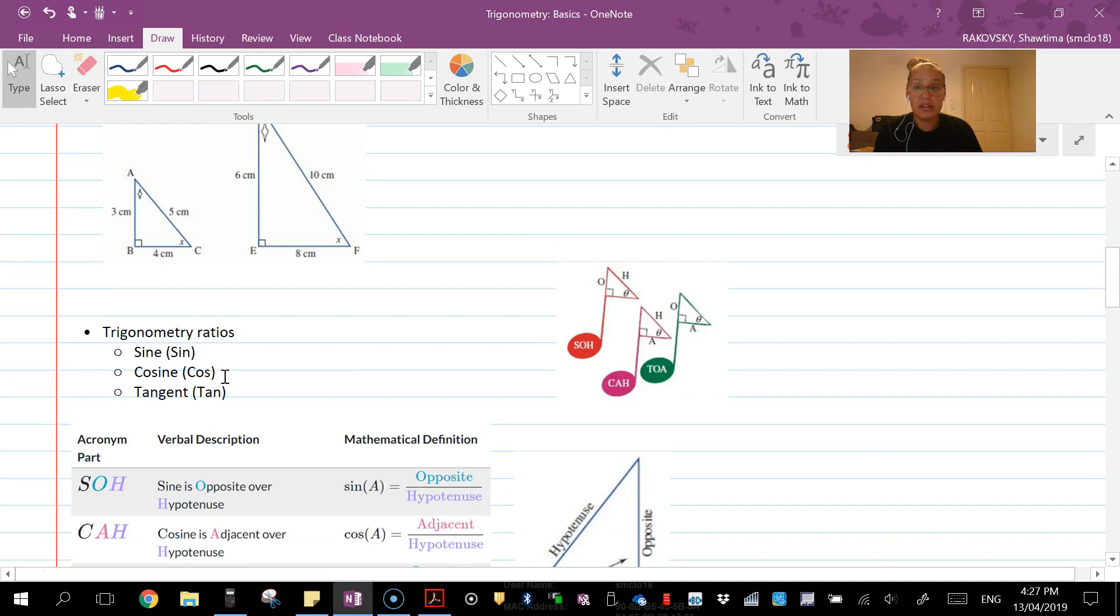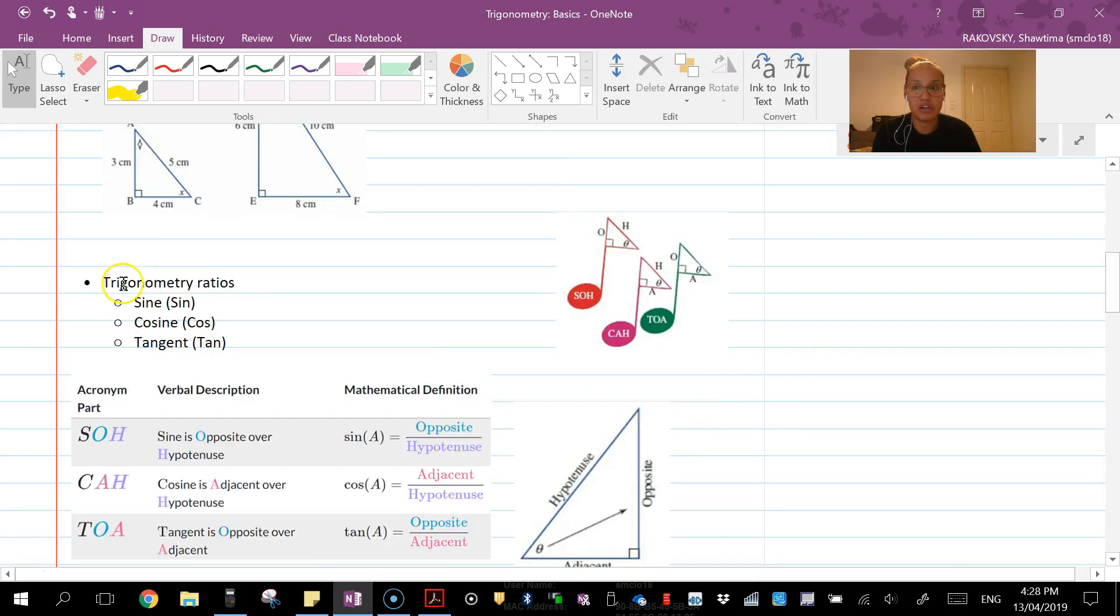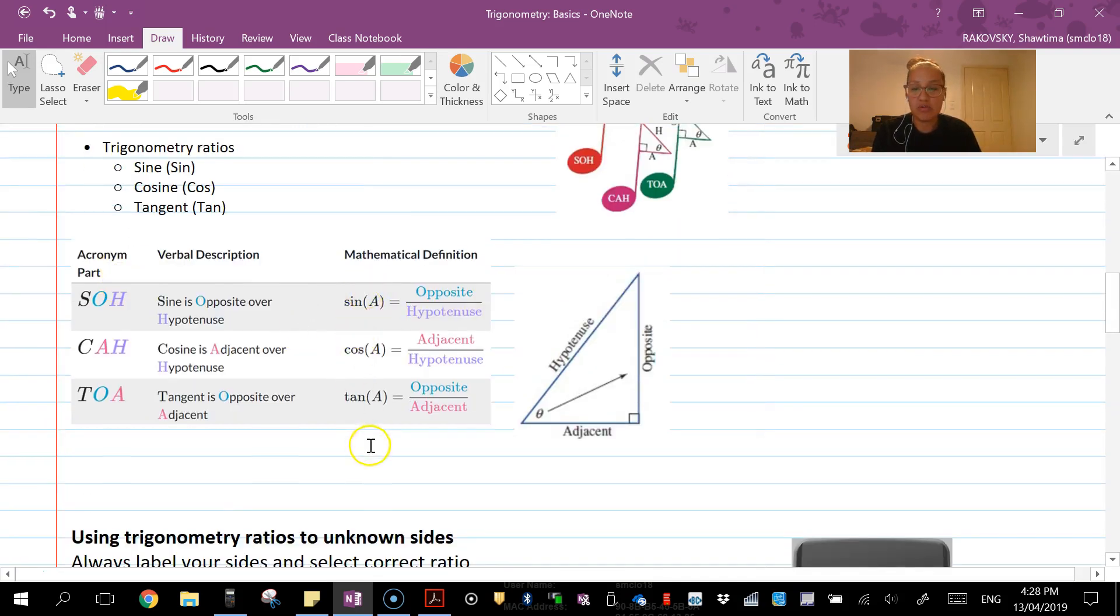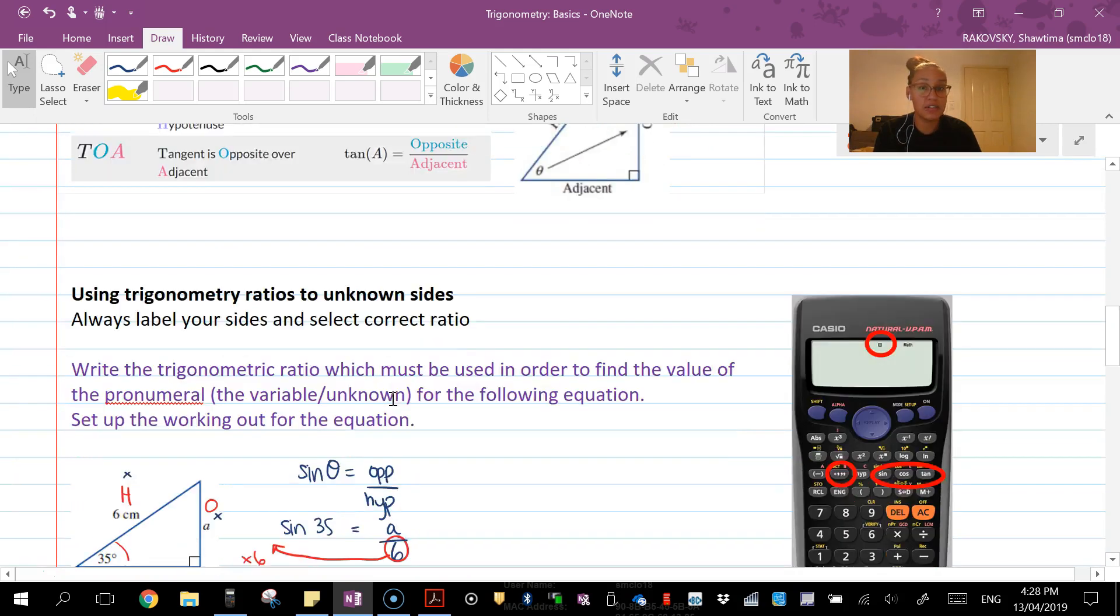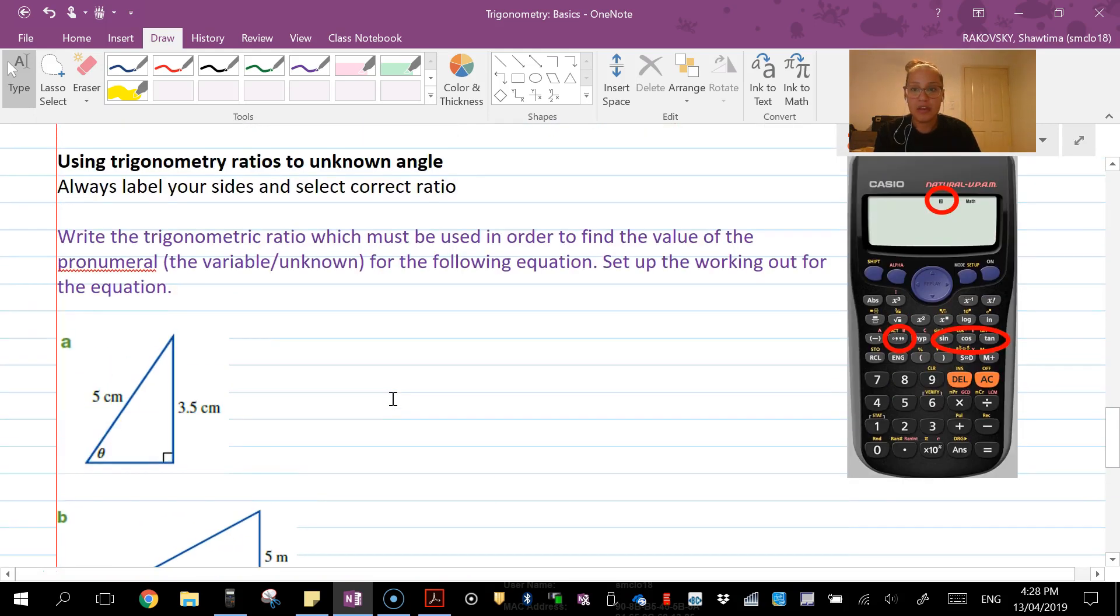Sine, cos and tan still apply, but we're looking for a different variable within the ratio. In previous lessons we looked at finding the missing side. Now we're looking at what happens when the angle is missing.